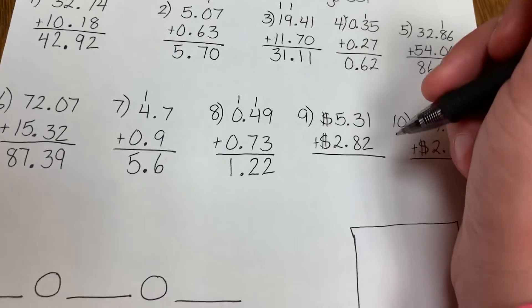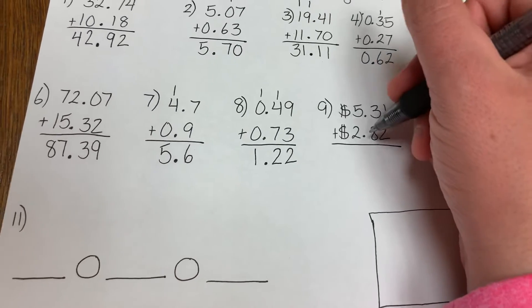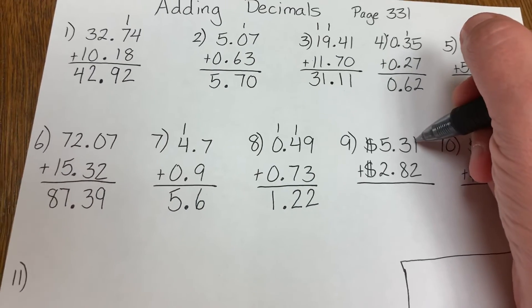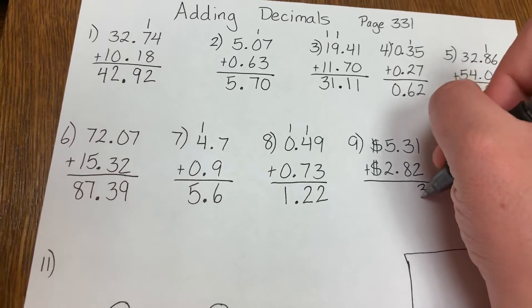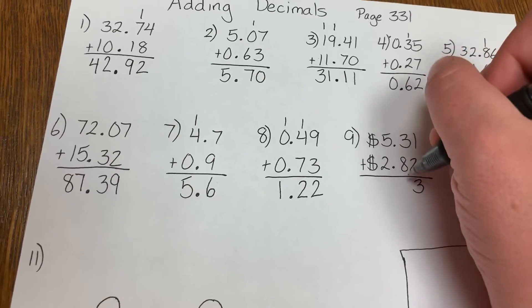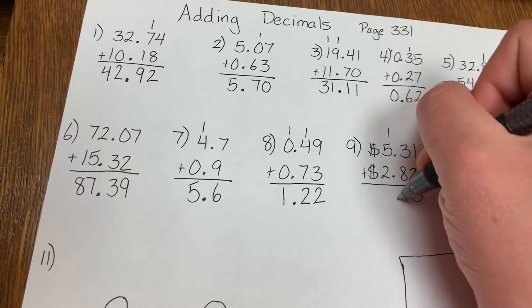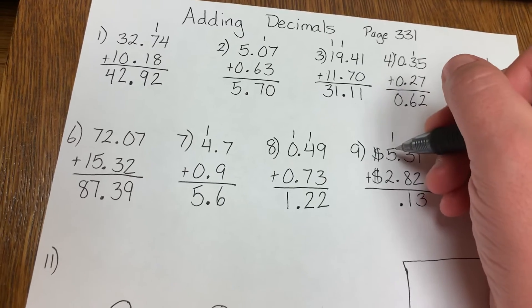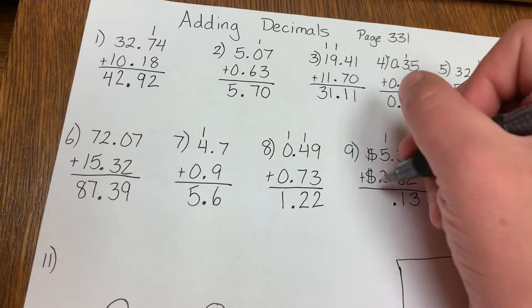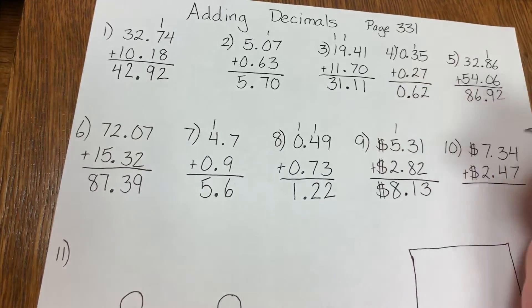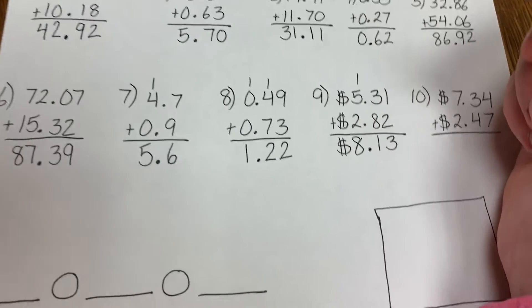Number 9: they are adding money together, so they're showing you that you use decimals when we add money. So 1 plus 2 is 3. 3 plus 8 is 11. 1 down, carry the 1. Bring down the decimal. 1 plus 5 is 6, 6 plus 2 is 8. And bring down the dollar sign, so you have $8.13.